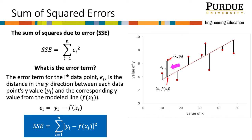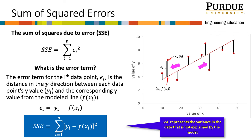So why squares of the errors rather than just summing the error terms? Notice that some of the data points are below the line. Therefore, the calculated error might be negative. Since we don't want negative errors to cancel out positive ones, we square all the individual error terms. Then we sum them up to calculate the sum of squared errors. This is an important term that we will use now and again later in our goodness of fit. It represents the variance in the data that is not explained by the model.